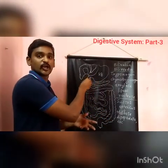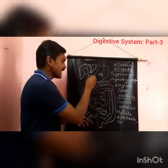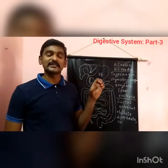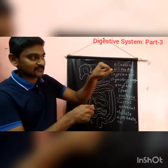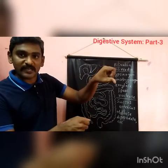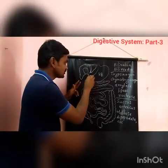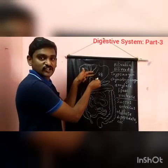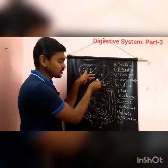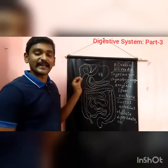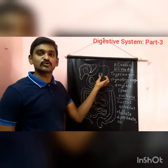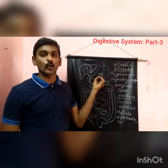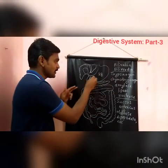The chyme entering from the stomach into the duodenum is guided by special muscles called sphincter muscles, which open and close to regulate transport of partially digested food from the stomach into the small intestine. The pH here is 1.8, due to hydrochloric acid.